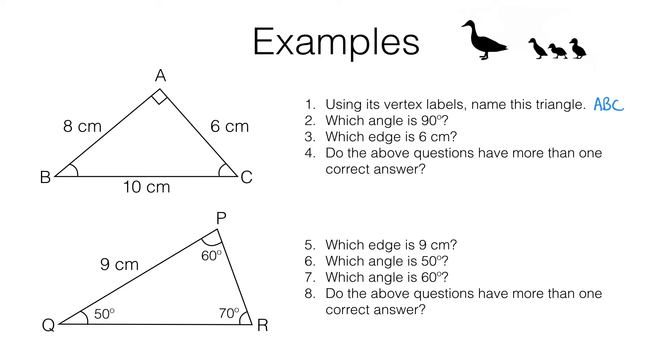Now we don't have to call it ABC. We could have called this triangle BCA. We could have started at B and gone anti-clockwise like this. B, C, A and we're back to B. So you could have said BCA or we could have started at C and gone anti-clockwise. C, A, B, back to C. That gives us a triangle CAB.